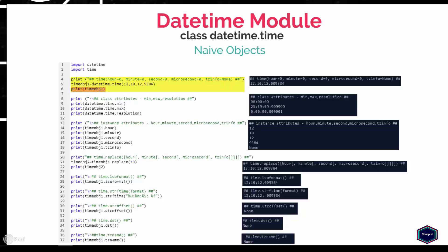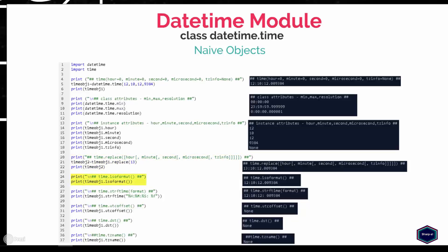The time object also provides the magic method __str__, so I can print the time object using the print function. The time class also provides three class attributes — min, max, and resolution — which return the earliest representable time, latest representable time, and smallest possible difference between two non-equal time objects. The time class also provides five instance attributes: hour, minute, second, microsecond, and tzinfo. The replace method returns a new time object where one or more components have been replaced. The isoformat method returns a string representing the time in ISO 8601 format. The strftime method returns a string representing time as specified by format arguments. For a complete list of formatting directives, please go to the official Python documentation. The time class also provides three other methods — utcoffset, dst (daylight saving time), and tzname. For naive objects, all these methods return None.